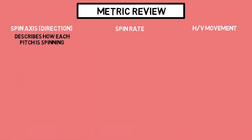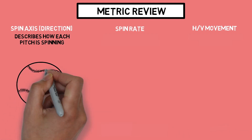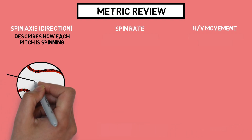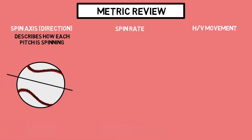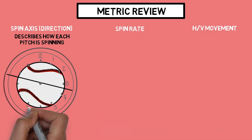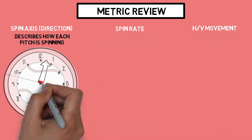First, we have spin axis. Simply stated, this metric is the description of how each pitch is spinning. It's not the axis that the pitch is spinning around, rather the direction it's spinning from, shown as time on a clock.